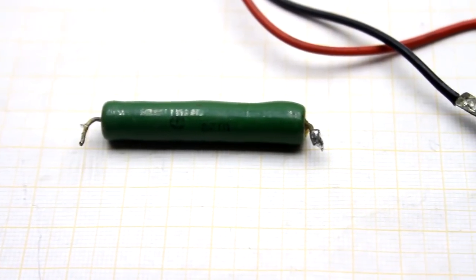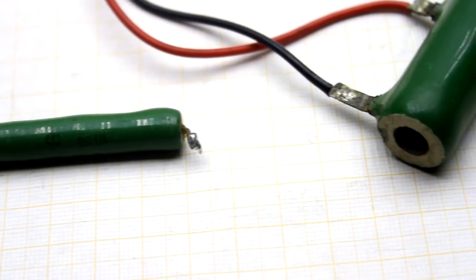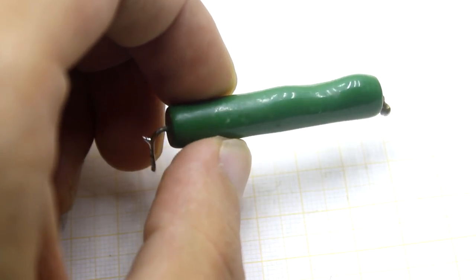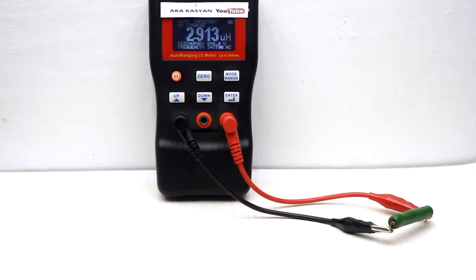It is necessary to use a 4 ohm resistor as a load. If possible, use non-wire resistors, since wire resistors have an inductance that affects the test results.